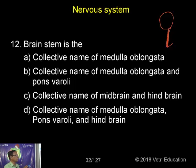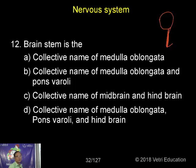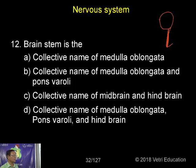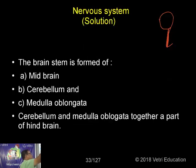The collective name of medulla oblongata, pons, and midbrain — all three structures together — is what is known as the brainstem. These structures together form a stem holding the cerebrum, that's why it is called the brainstem — three structures together.